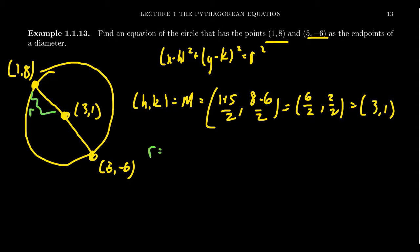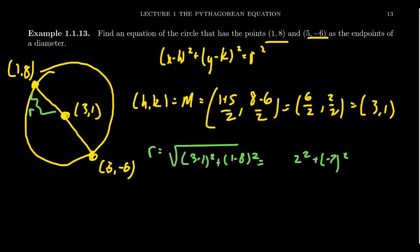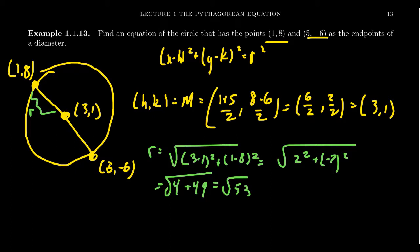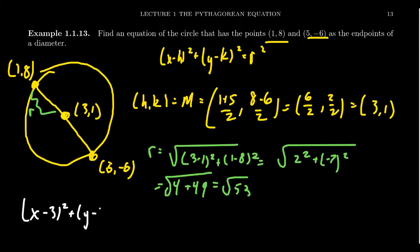The radius r equals the distance between point one comma eight and center three comma one. Taking the difference of x coordinates: three minus one equals two, squared gives four. Difference of y coordinates: one minus eight equals negative seven, squared gives 49. So r equals the square root of 53. We actually just need r squared, which equals 53. Therefore the equation of the circle is x minus three squared plus y minus one squared is equal to 53.